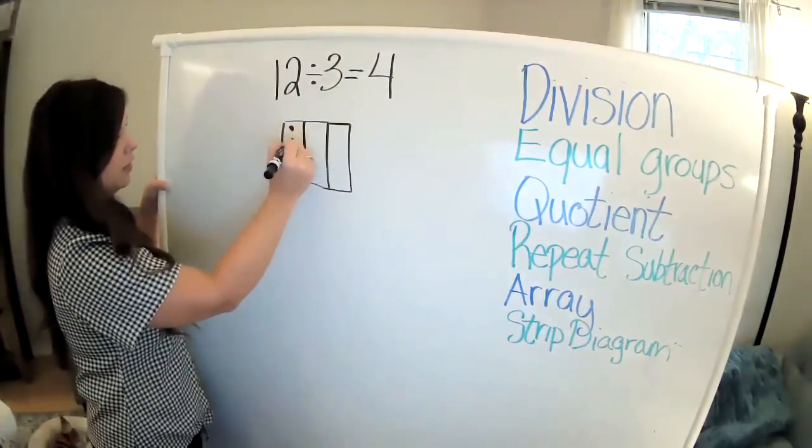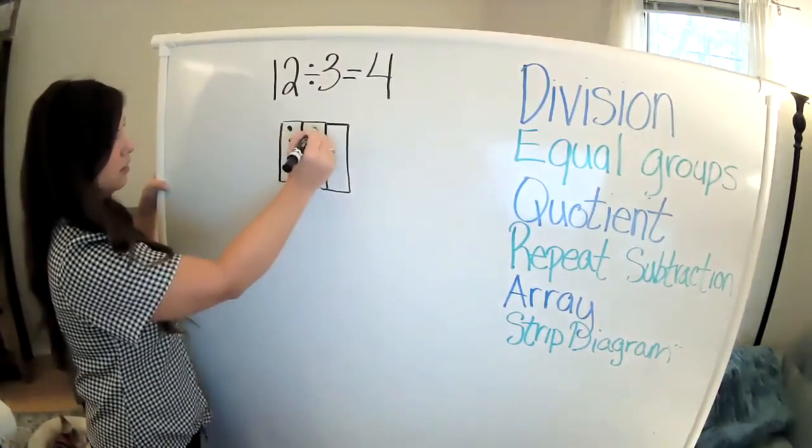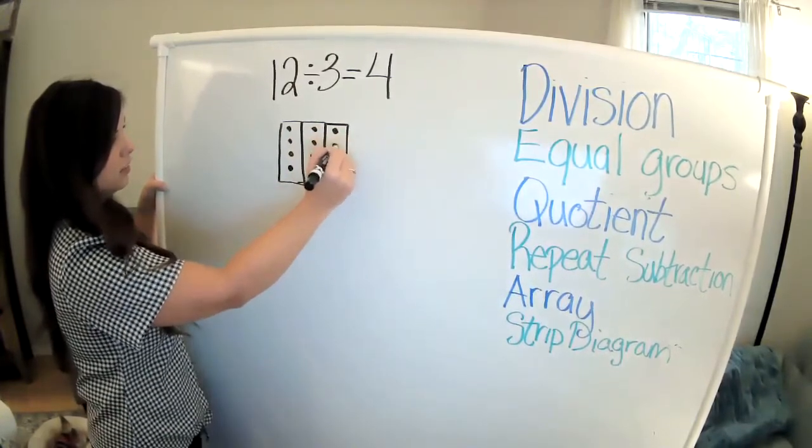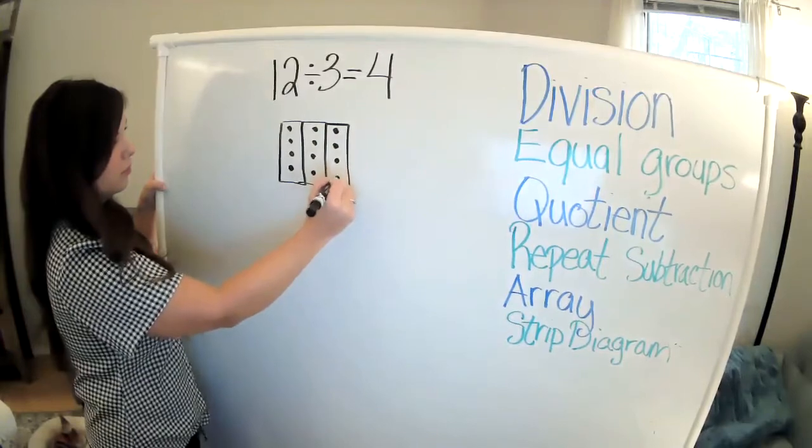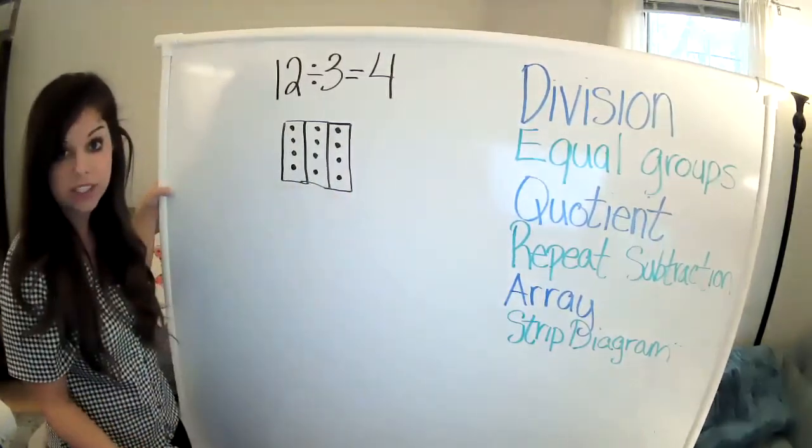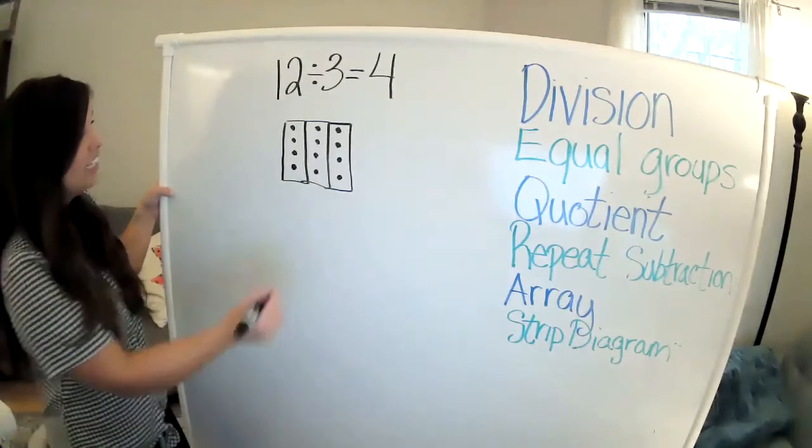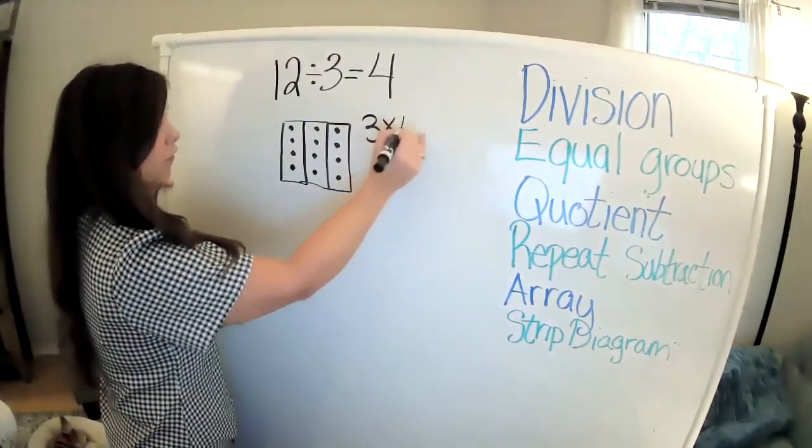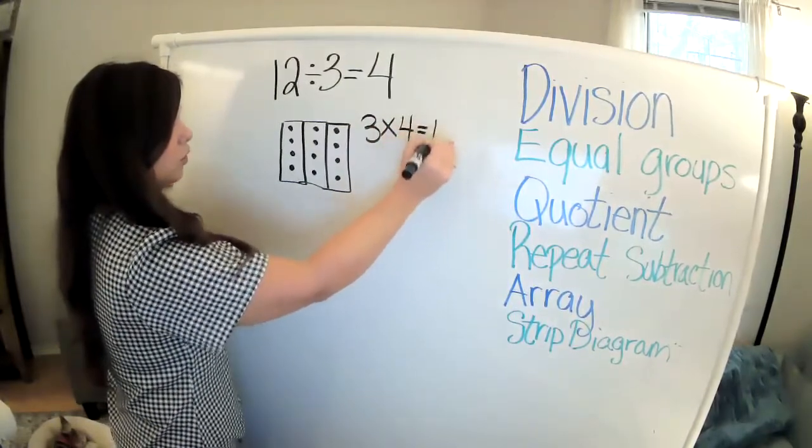So in this array, I could do this. And you'll notice that this array also shows the fact family. It shows me that three equal groups of four is equal to 12.